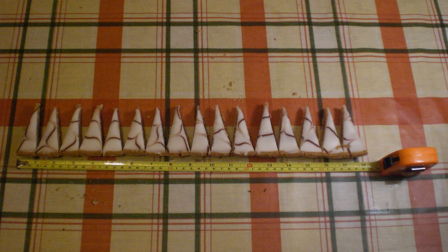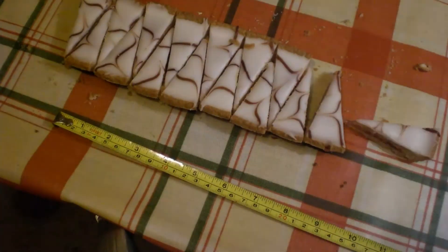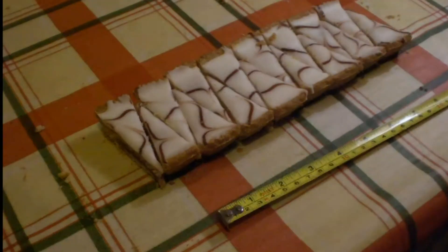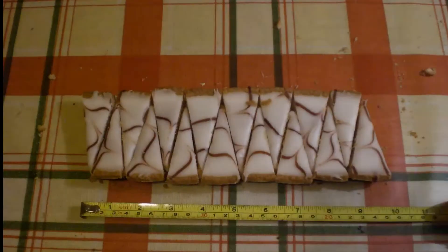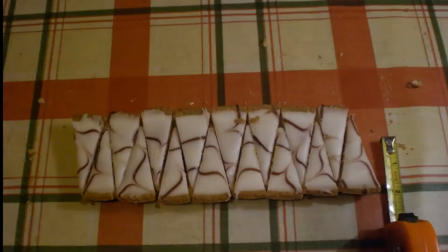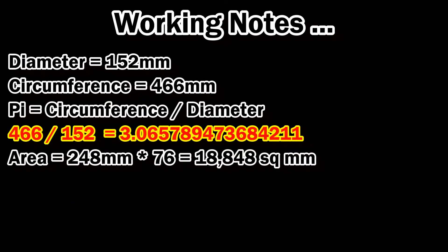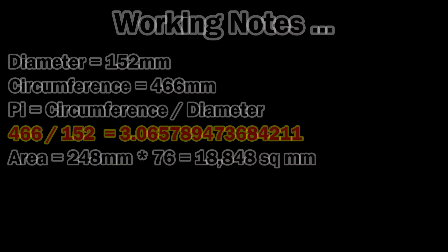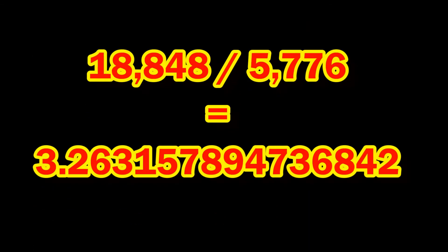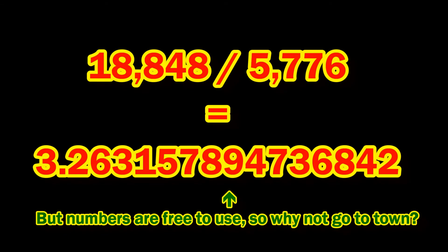Let's try to measure the area. We can do this by packing the slices into a rectangle — well, a skewed rectangle, which is a parallelogram. The area of a parallelogram is calculated by multiplying length, 248 millimetres, by perpendicular height, 76 millimetres. So the area is 248 times 76, which is 18,848 square millimetres. The radius is 76, and 76 squared is 5,776. So 18,848 divided by 5,776 should give us pi. We actually get 3.2631578, etc.